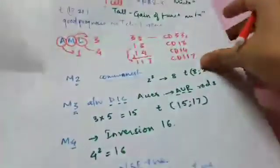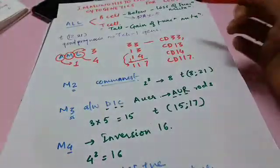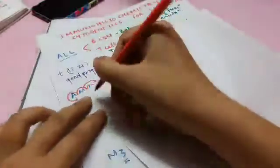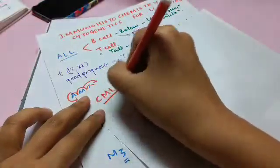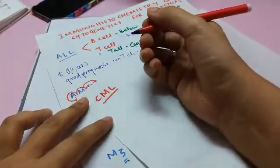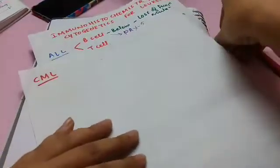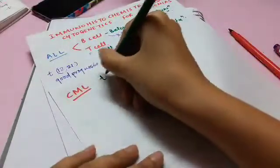Now proceeding with the next part of the video, after the ALL and the AML comes our beloved CML, and there is no need for a mnemonic for it. Everybody knows that CML is translocation 922, that is Philadelphia chromosome.